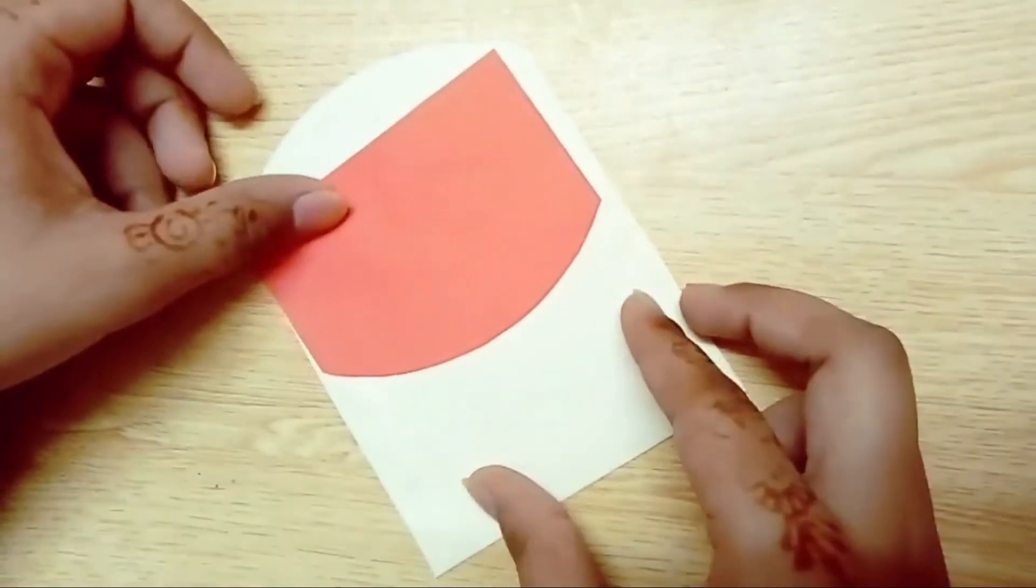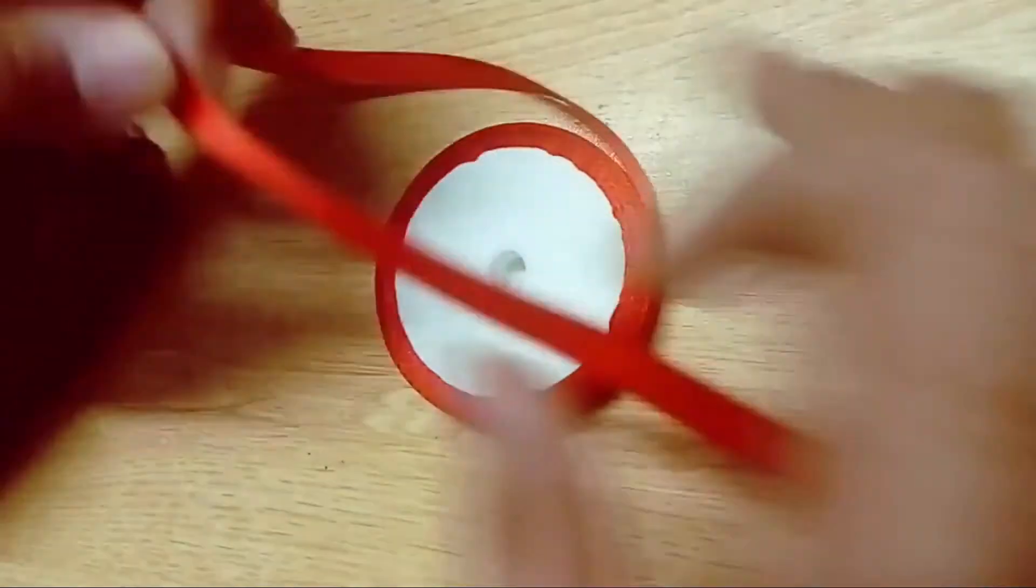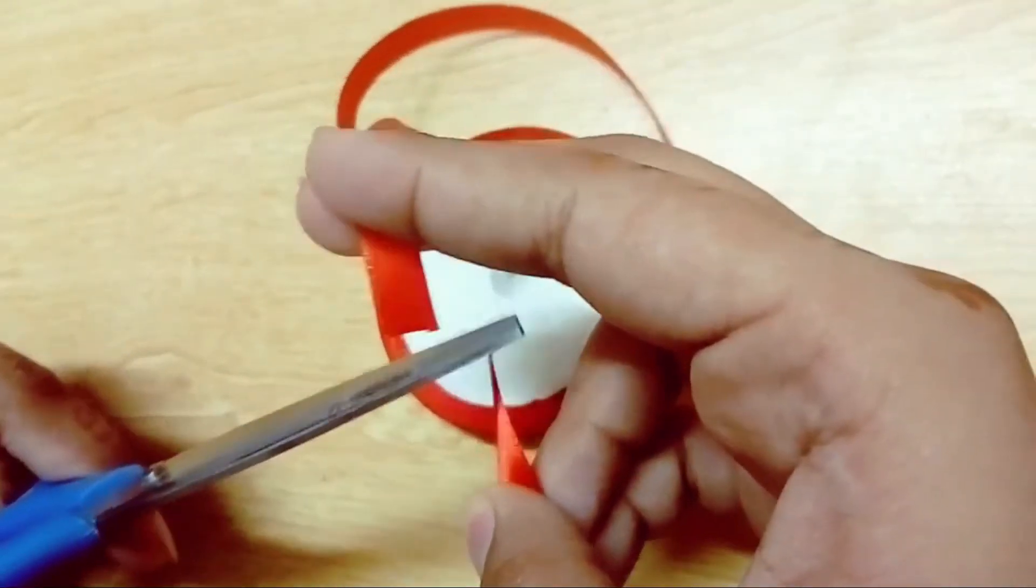As a card, I'm using orange-red paper, but you can use any color according to your choice. For decoration, I'm using a ribbon to make a bow.